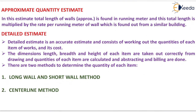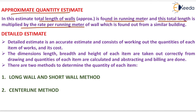The next type is the approximate quantity estimate. In this estimate, the total length of walls is found in running meters, and this total length is multiplied by the rate per running meter of wall, which is found from a similar building in the same locality, to find the approximate quantity estimate.